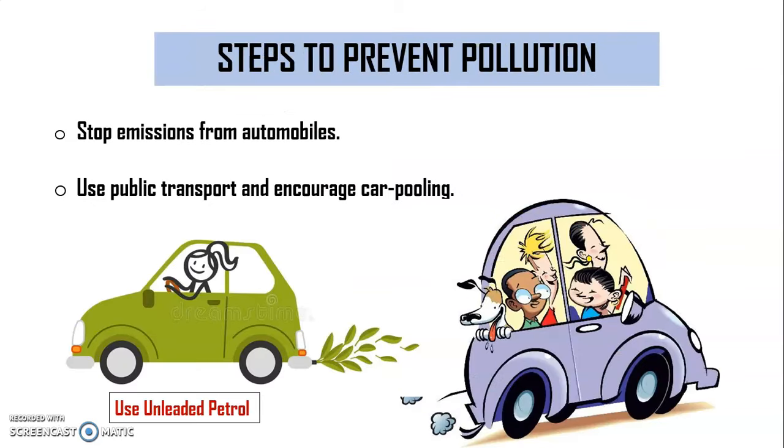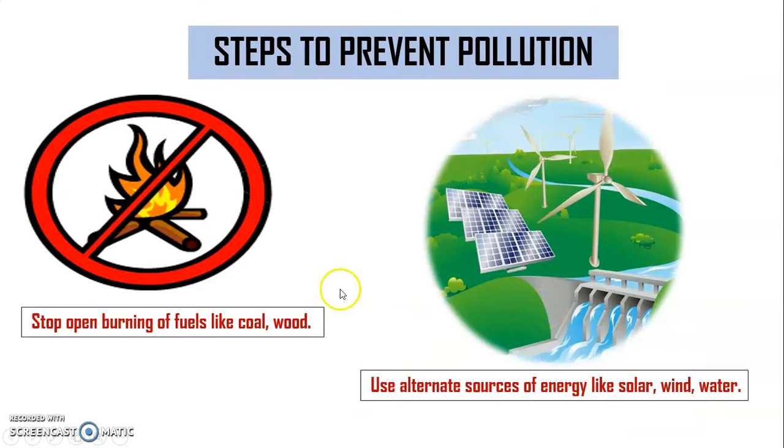How can you prevent? What are the steps to prevent air pollution? We have to stop emissions from automobiles. For that we have to use unleaded petrol. Use public transport and encourage carpooling. Stop open burning of fuels like coal, wood. Use alternate sources of energy like solar energy, wind energy and water energy.